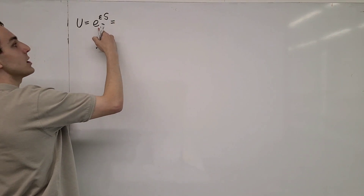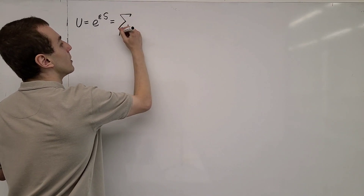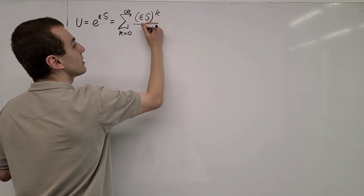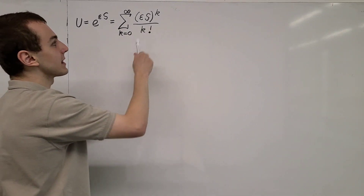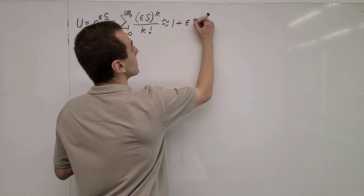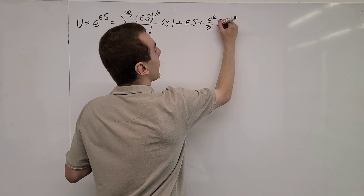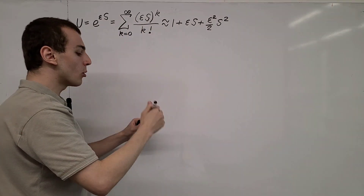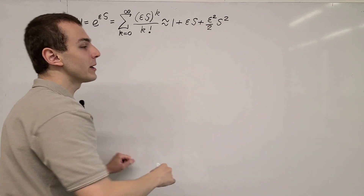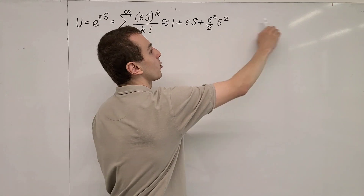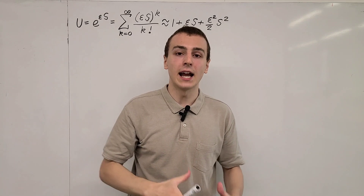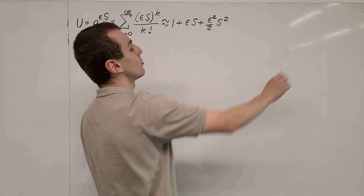We can write this in an equivalent form. This exponential is equivalent to the sum from k equals zero to infinity of (epsilon S) to the power of k divided by k factorial. We can approximate this by taking a few terms: this is approximately equal to one plus epsilon S plus (epsilon squared on two) S squared. In this video, I'm going to go up to second order. This is why it's important to keep epsilon — we can tell just by looking at a term what order it is. We can't include higher order terms if we're rejecting certain terms, so cubic and higher will be rejected.